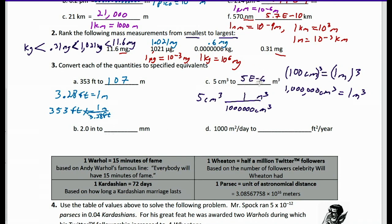If you don't know what the E notation means, here's a refresher: E is just equal to 10 to some power. So E stands for 10 to the blank, and then the number — negative 6 in this case — goes right there, meaning 10 to the negative 6 power.